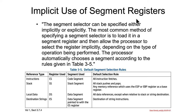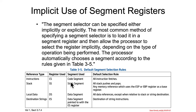Now that we know a bit about segmentation, it turns out that you've been using segmentation all along without even knowing it. Segmentation can either be used implicitly or explicitly, and the most common way is to actually be using it implicitly. The processor will automatically and implicitly choose a segment register based on what type of access it's doing.